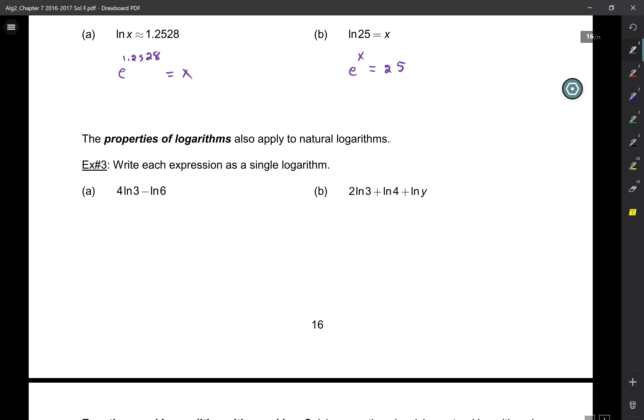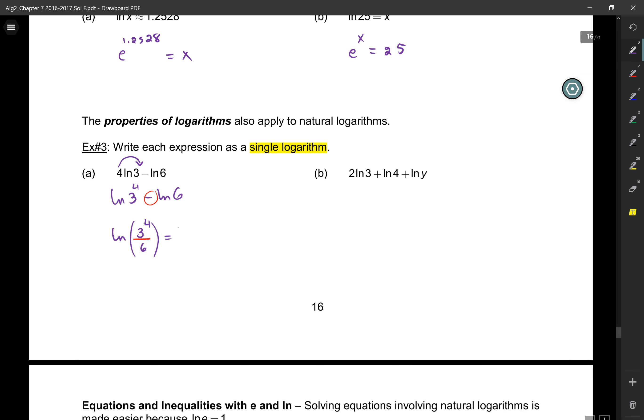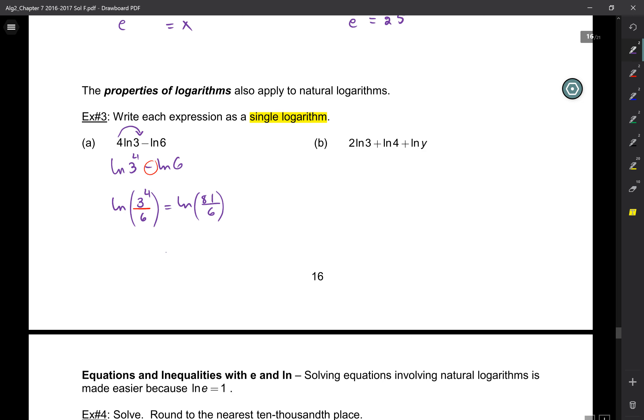So all the properties that we learned about condensing and expanding with logs also apply to this. So this one, you have a coefficient, and it becomes an exponent. So this becomes ln of 3 to the 4 minus ln of 6. So now, if we're going to condense it, we're going to write it as a single logarithm. So this gets 1 ln of 3 to the 4. And if I have a minus in between the logs, what does that translate to? Division. So divided by 6. And this, we need to simplify. So that's ln of 81 over 6. We can divide both by 3. So that'll be ln of 27 over 2.